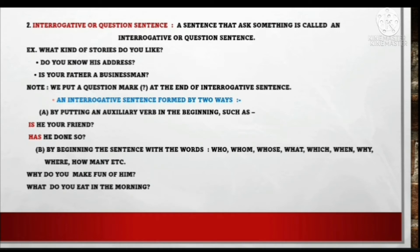An interrogative sentence is formed by two ways. The first way is by putting an auxiliary verb in the beginning of the sentence. Such as: is he your friend? Has he done so? Look — 'is' and 'has' are auxiliary verbs, also called helping verbs. They are placed at the beginning of the sentence.